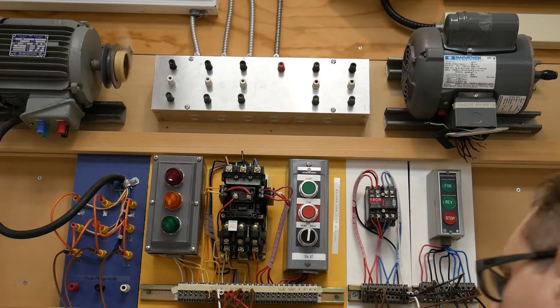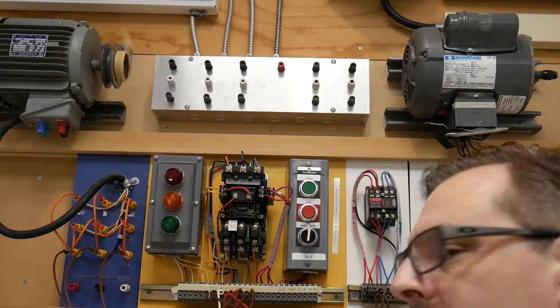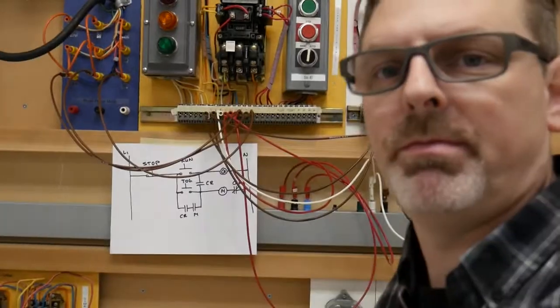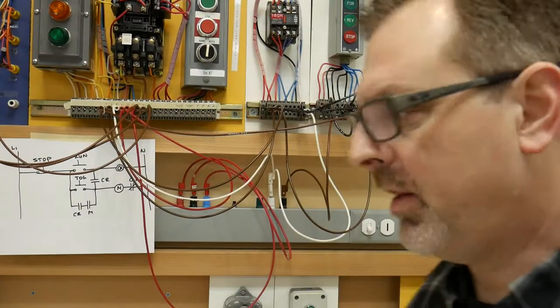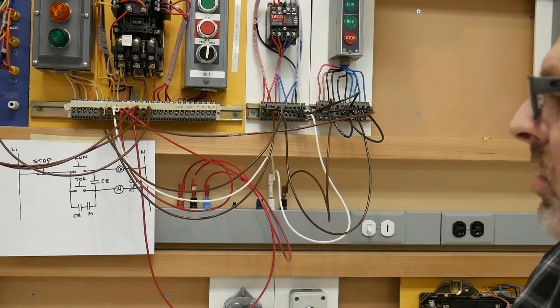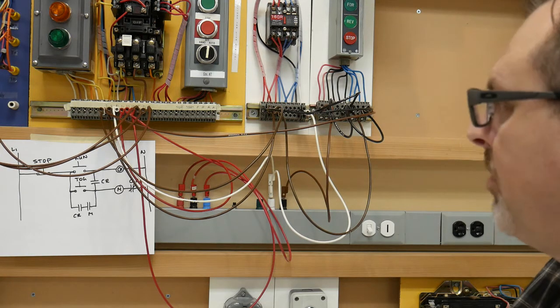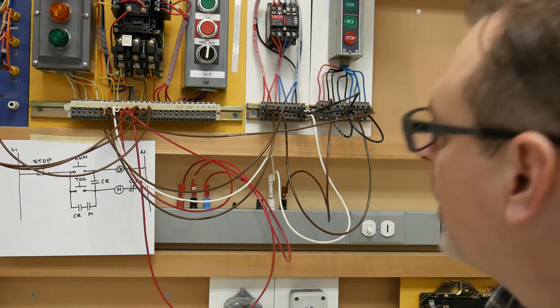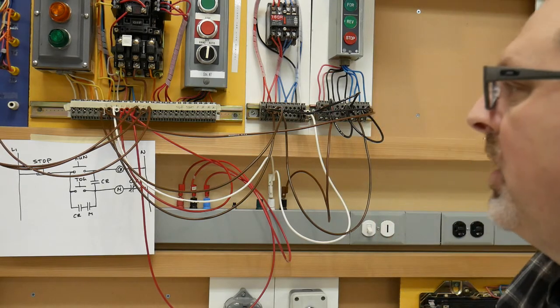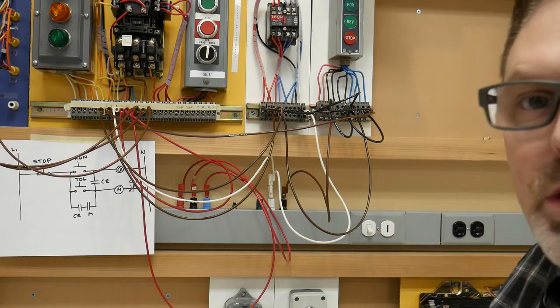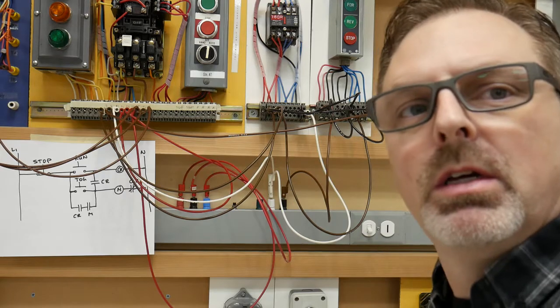And that's it. Power down. I'll disconnect and clean up my workspace. And that was the run jog control using a control relay. Probably one of the harder circuits we do in the lab space. Next video, we'll do the forward reversing combination starter. See you in the learning hub.